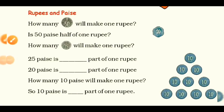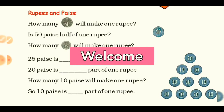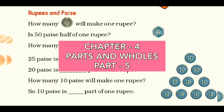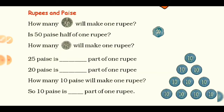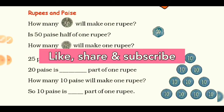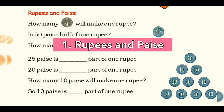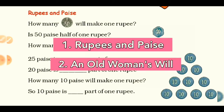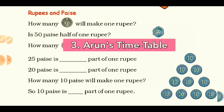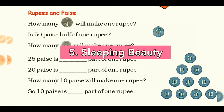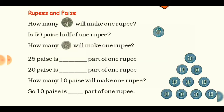Hello everyone, I hope you are all well. Welcome to this online class video. This is the fifth part of the fourth chapter, Parts and Holes, of Class 5 Mathematics. Before starting, I request all viewers to like, share, and subscribe to my channel. Let's start the class. Today we have five topics: Rupees and Paise, An Old Woman's Will, Arun's Timetable, School Magazine, and Sleeping Beauty.